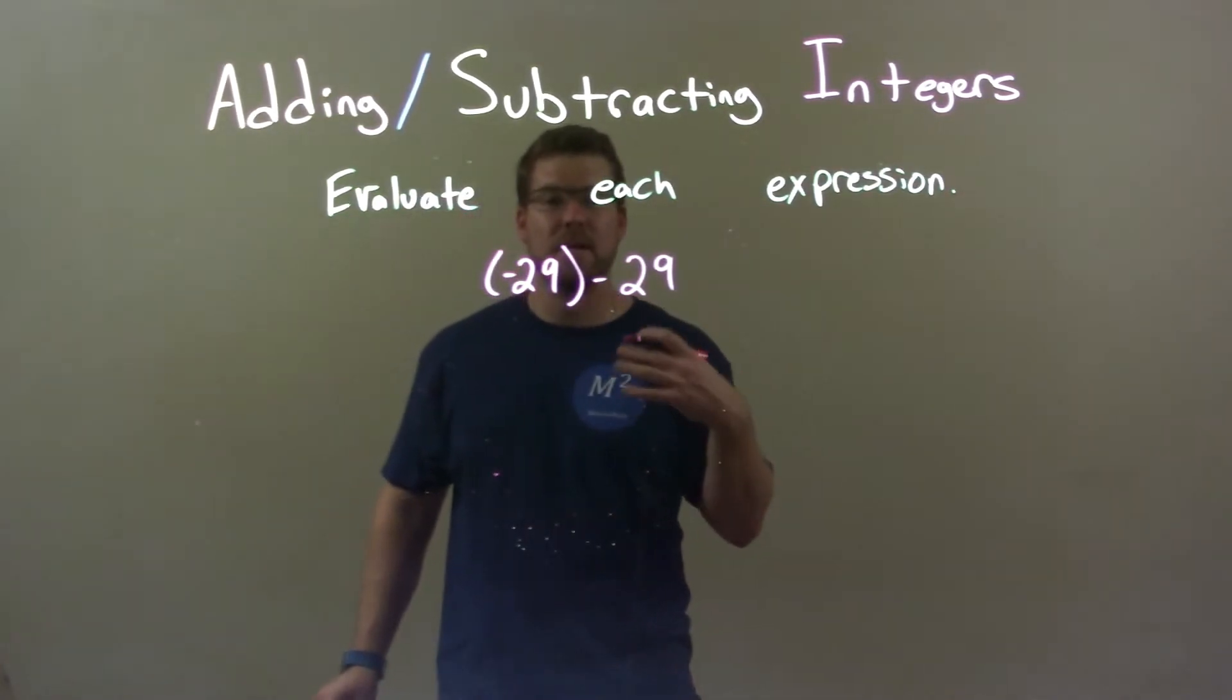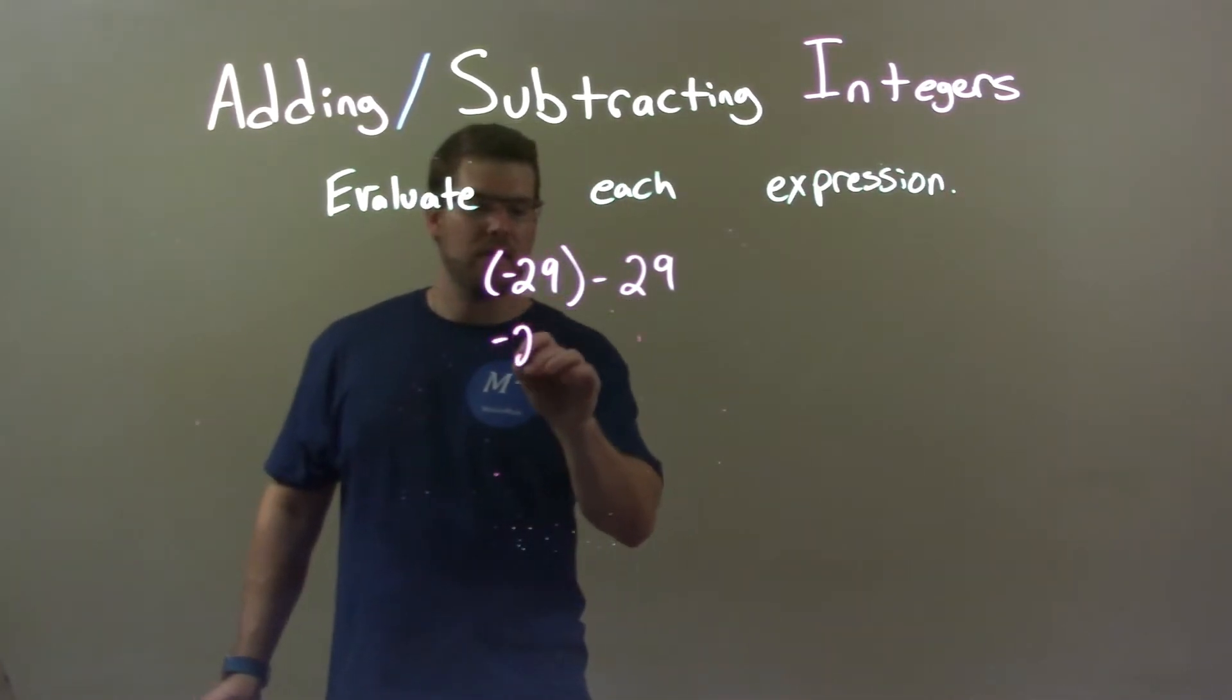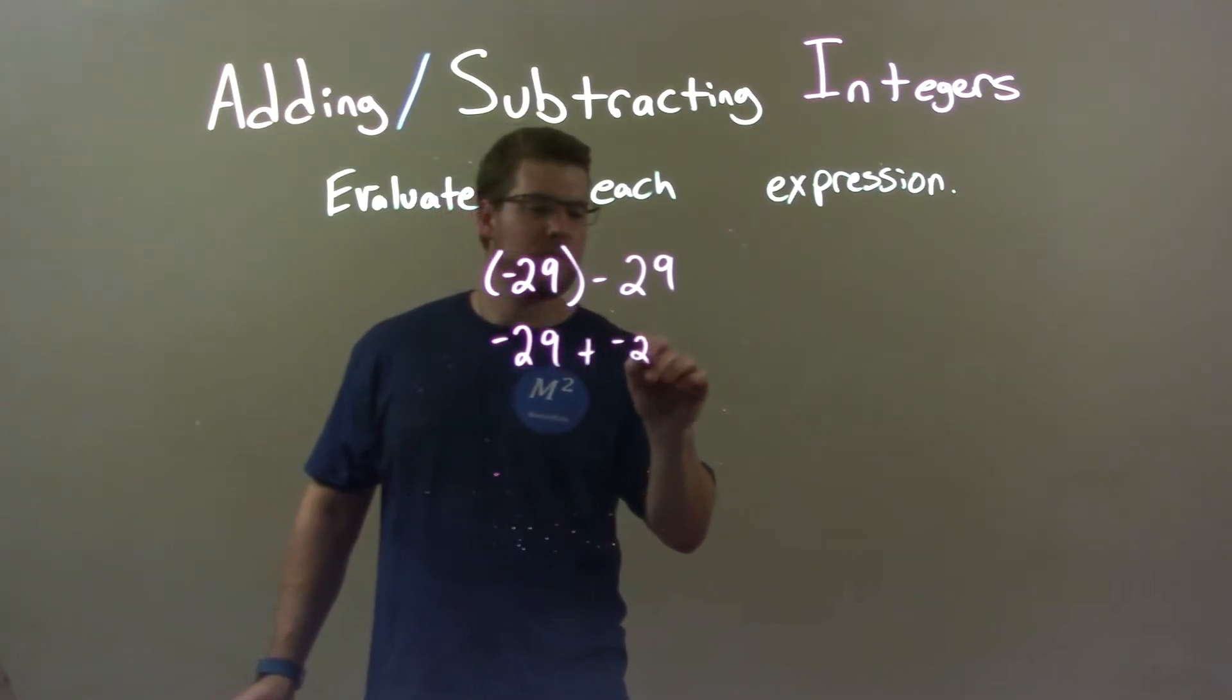Well, you know subtracting 29 is the same thing as adding a negative. So you have negative 29 plus a negative 29.